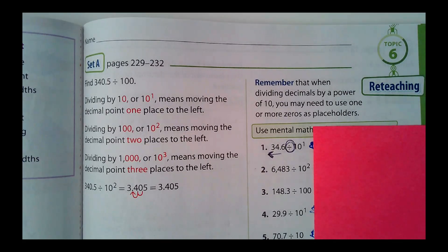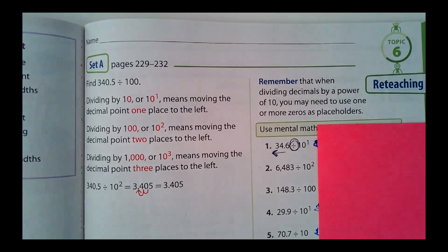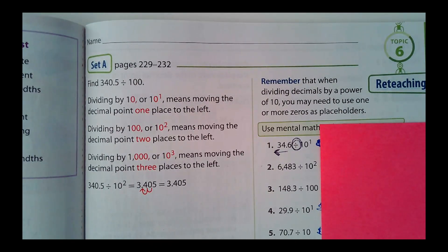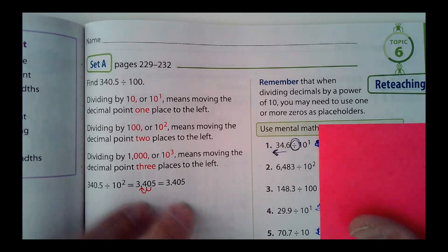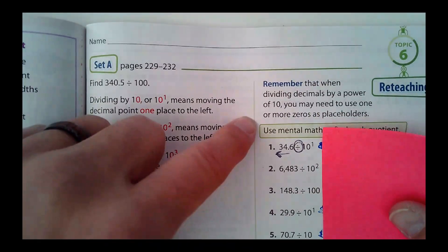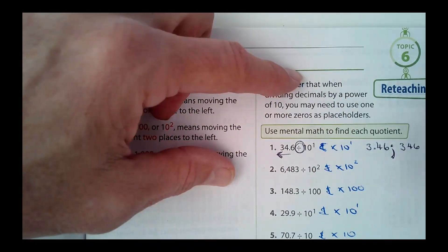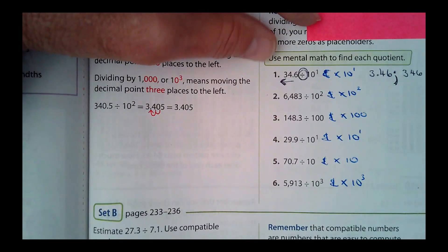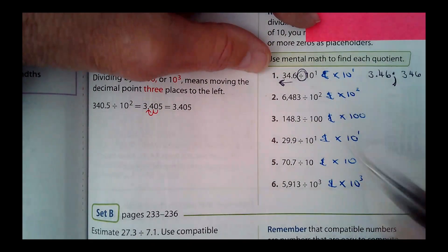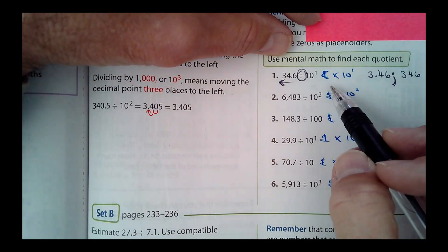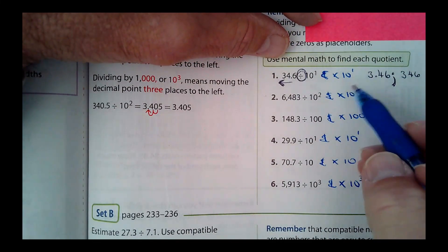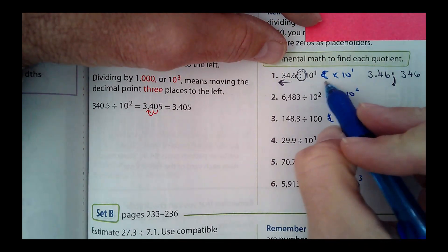This is the end of chapter six, page 255, the reteaching section. The very first set, Set A, says 'use mental math to find each quotient.' There are actually two problems I want you to do for each one because I've added something. I've done the first one for you — what I want you to do is copy this down for each one.